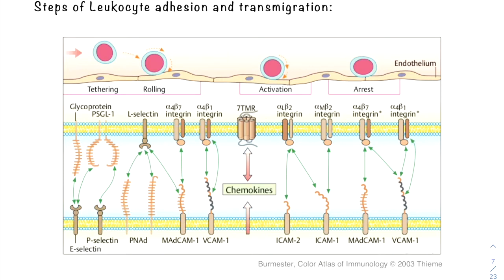As a first step, leukocytes engage adhesion molecules in order to slow down. This step is called tethering and is mediated by selectins. There are various selectins like E-selectin, P-selectin, and L-selectin. The adhesion bonds dissociate and build up over and over again, causing a slow rolling motion over the endothelium.